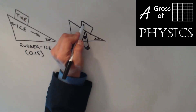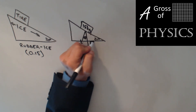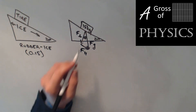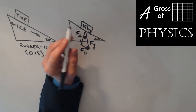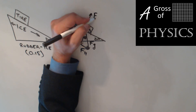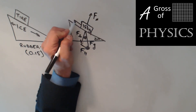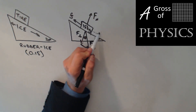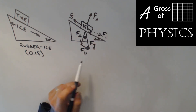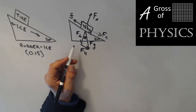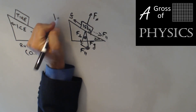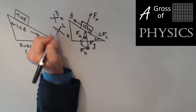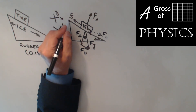We start with a free body diagram showing the gravitational triangle with the same 20-degree angle as the incline. We have gravity acting straight down, the parallel component pulling the tire down the incline, and the perpendicular component acting opposite to the incline surface. The normal force acts up and to the right, and friction opposes the motion up the incline. Instead of an xy coordinate system, we shift to a parallel-perpendicular coordinate system aligned with the incline.